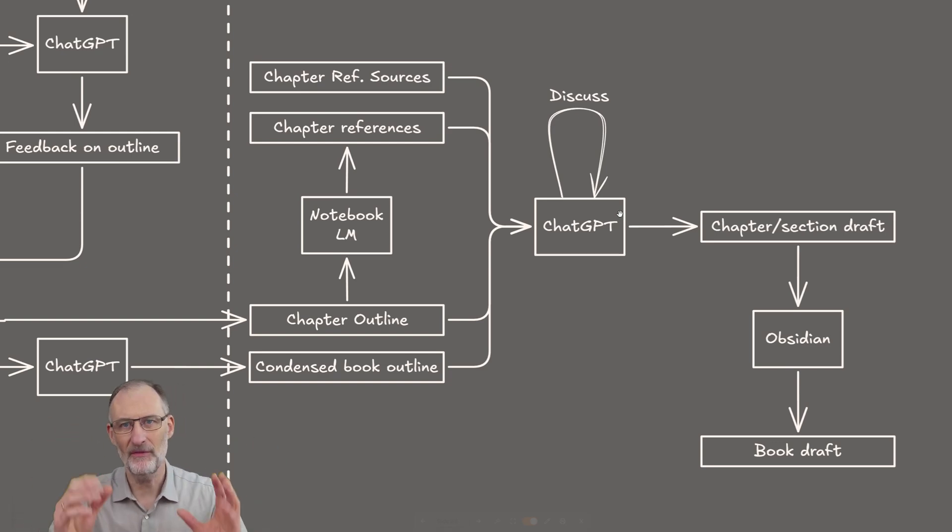And then, before generating my chapter, I ask ChatGPT to ask me clarification questions to have a discussion about that chapter. And once I'm done with that, actually, I provide some of these inputs again, so they're at the top of the context window. And with this input, I ask ChatGPT to generate my section draft, I review it and edit it in ChatGPT, and when I'm comfortable, I save it as my chapter in Obsidian.